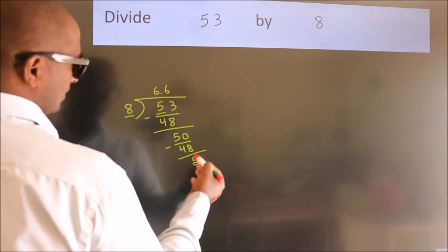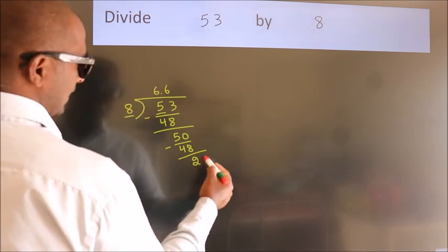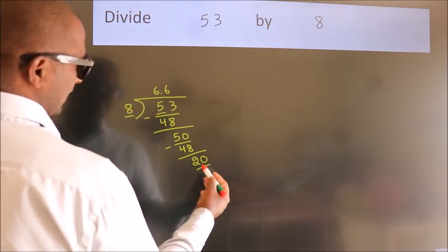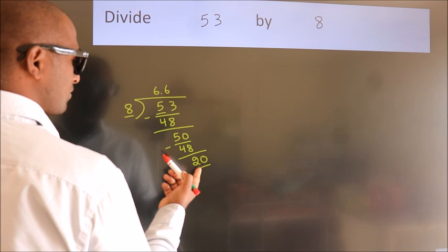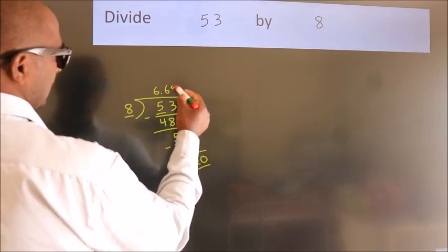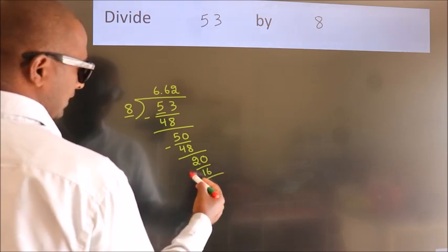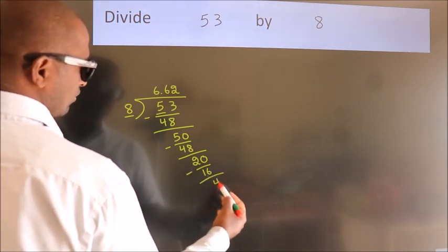After this, we already have the decimal. So directly take 0. So 20. A number close to 20 in 8 table is 8 times 2, 16. Now we subtract. We get 4.